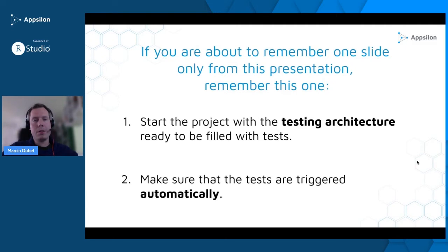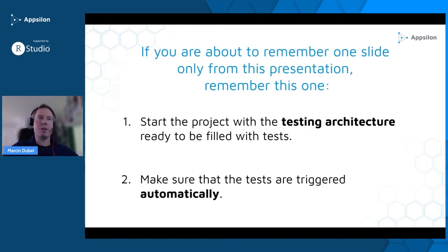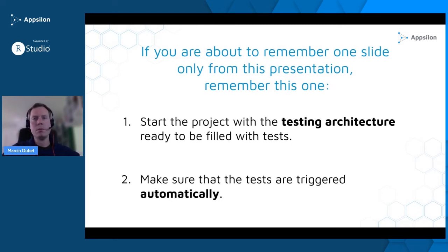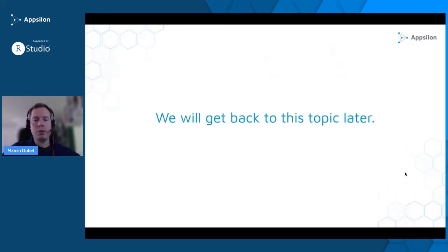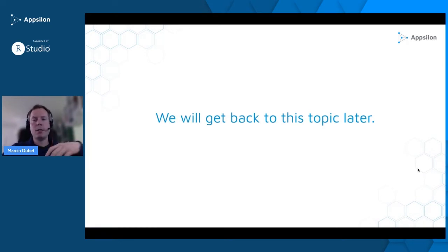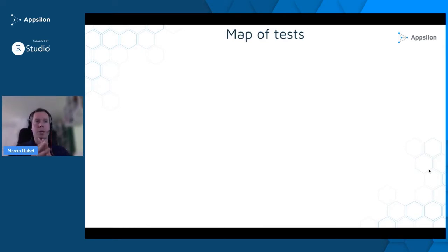When the testing architecture is already there from the start, you might find time to sneak in some tests while working on features for the client — and they won't even notice, but you'll have tests and the client will be happy. The second point: make sure tests are triggered automatically. I've seen many great tests that were never triggered at all — essentially useless. After a month or two of development without triggering any tests, you run them and they're not synchronized at all. So without automatic triggering, tests are kind of useless.